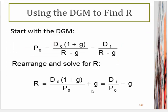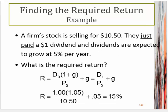So how can we find some of these variables? We first want to concentrate on R, the required return on the stock. One way we can do this is simply solve for R in the formula. If you solve for R, we end up with this simplified equation: the dividend yield plus the growth rate of dividends. For example, a stock has been selling for $10.50. They just paid a $1 dividend, and dividends are expected to grow at 5% per year. What's the required return?